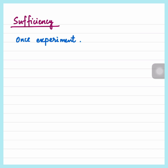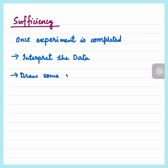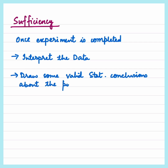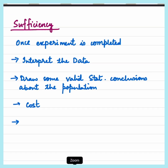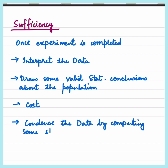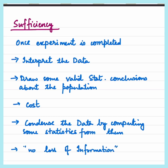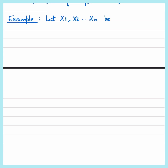After the completion of any experiment, the job of a statistician is to interpret the data she has collected and to draw some statistically valid conclusions about the population under investigation. In addition to being costly, the raw data by themselves are not suitable for this purpose. Therefore, a statistician would like to condense the data by computing some statistics from them such that no loss of information is observed in doing so.